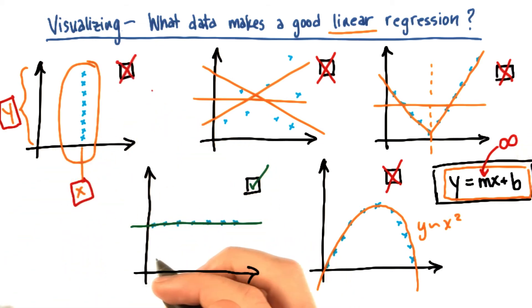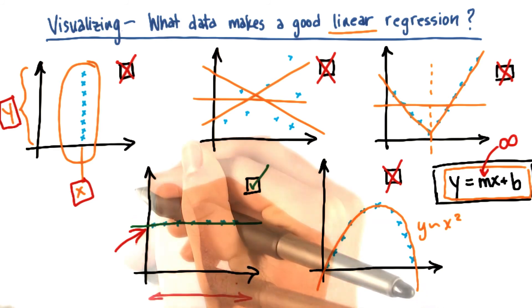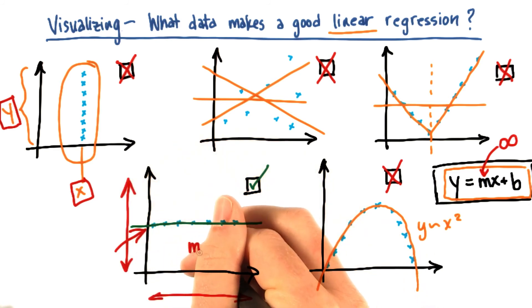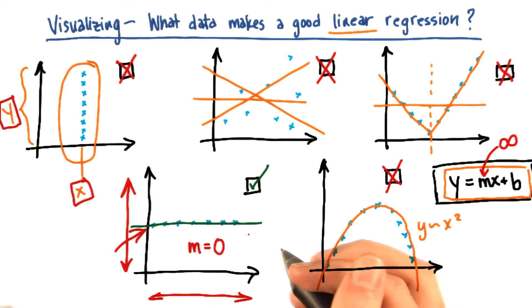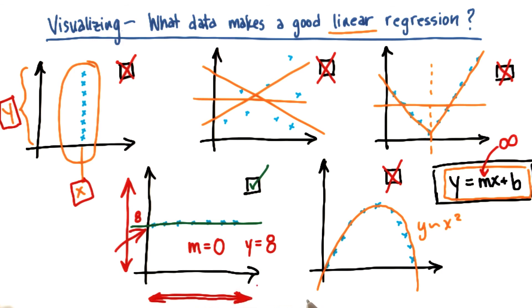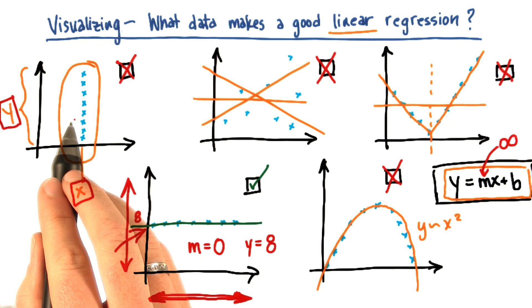Now in this case, of course, on the lower left, you only have variation in x. You could just say that, suppose that this is 8. You could just say that y is always equal to 8. And that would do a perfectly good job of describing the pattern. But it's very important that you have a range of x values that you can examine. So that's why this is not a good candidate for linear regression.